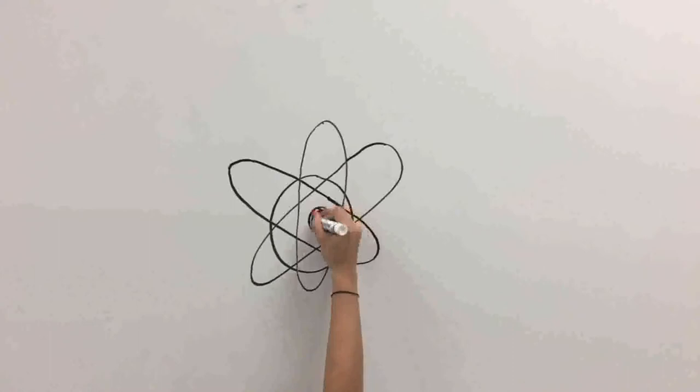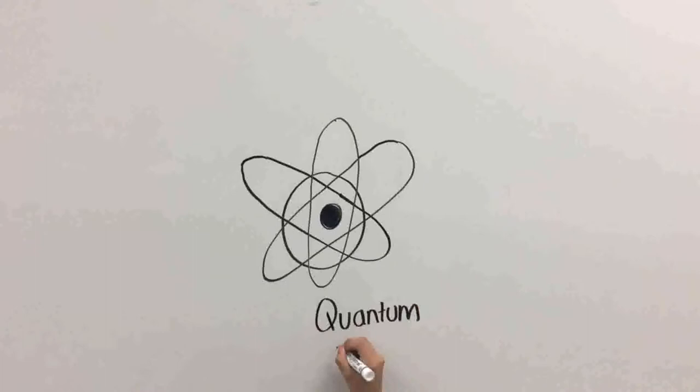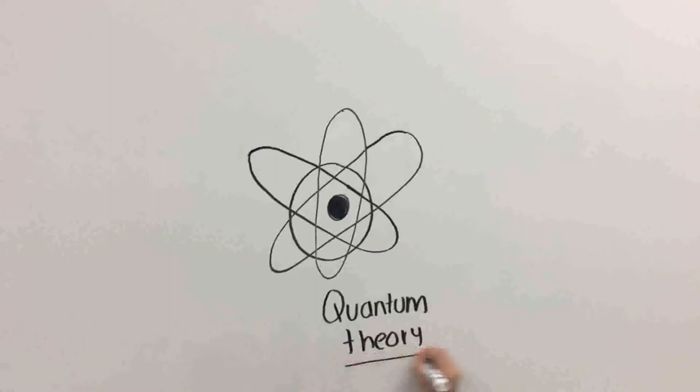He invented a controversial quantum theory of multiple universes. He developed this theory when he was a student at Princeton University. At that time, he received a lot of criticism and rejection because his theory was considered unproductive. Actually, this theory is not universally accepted.